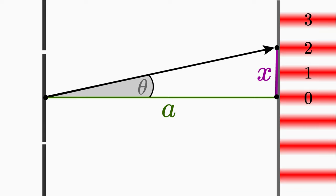The first approximation is as follows. The distance a between the screen and the double slit is much larger than the distance x of two fringes on the screen.